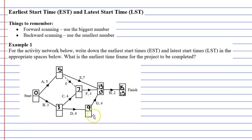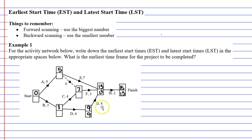For the preceding vertex: activity G takes 4 hours and the latest start time for the next activity is 13, so 13 minus 4 gives us 9. The latest that activity G can start is 9 hours into the project so that after 4 hours it completes at 13 — just enough time for activity H to start. For the vertex before F: 13 minus 3 gives 10. Activity F has a 3-hour window — it can start as early as 7 hours into the project or as late as 10 hours.